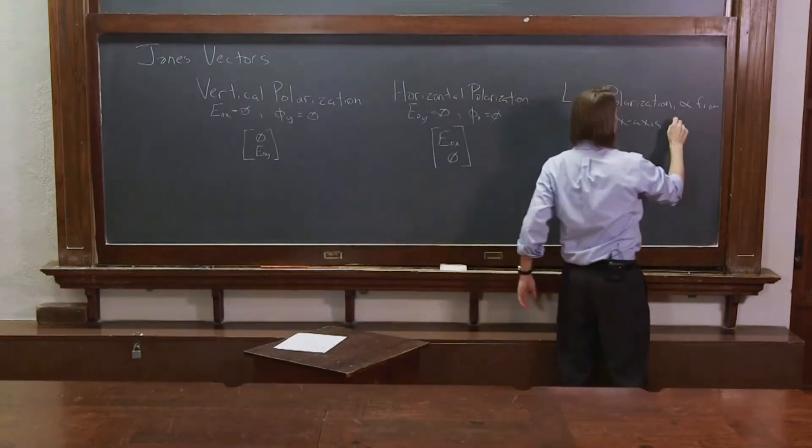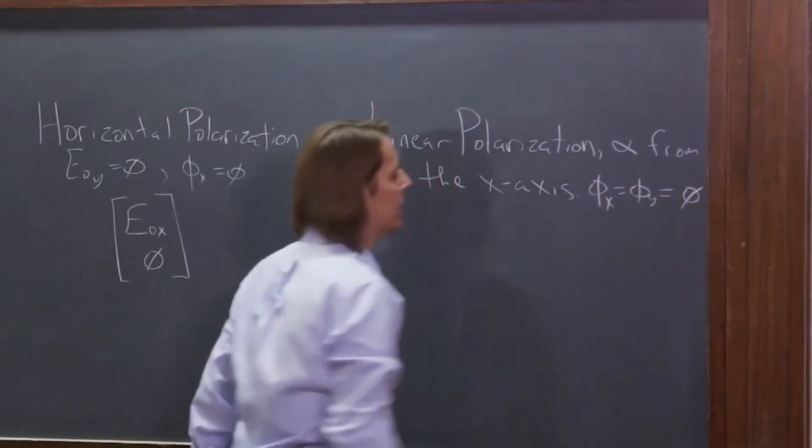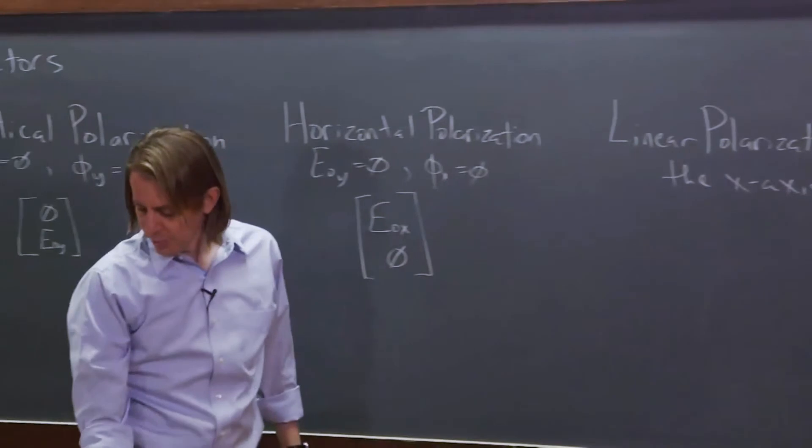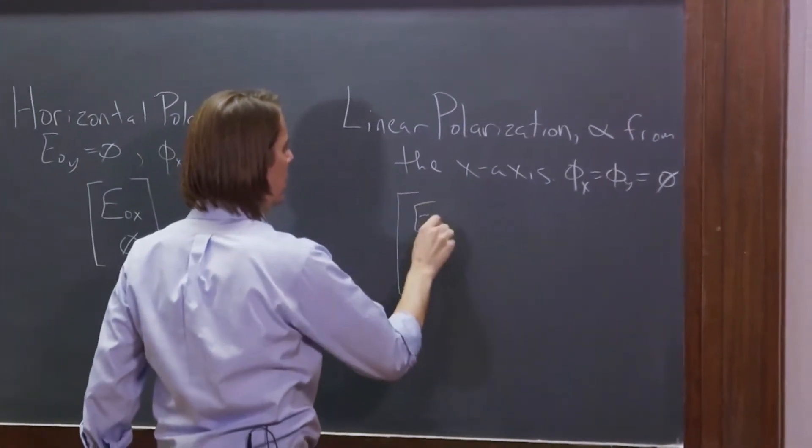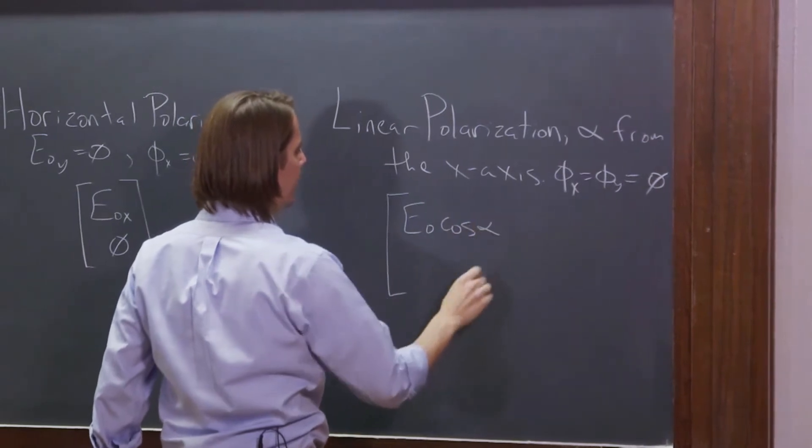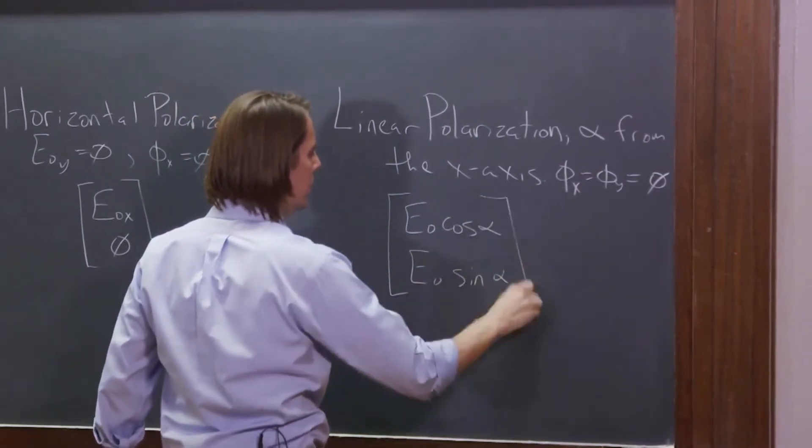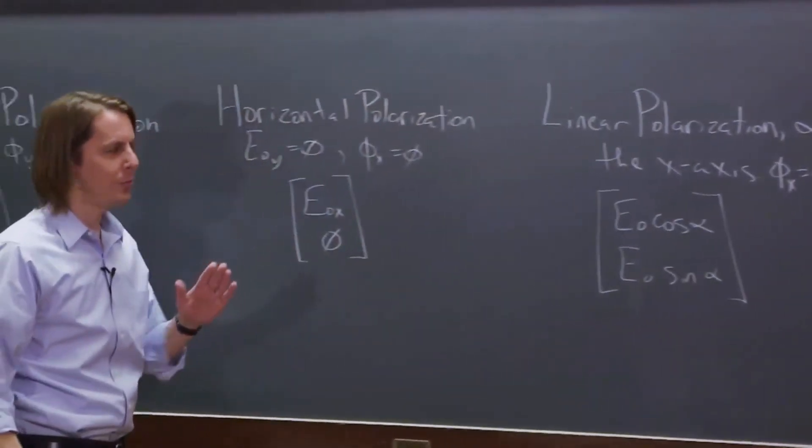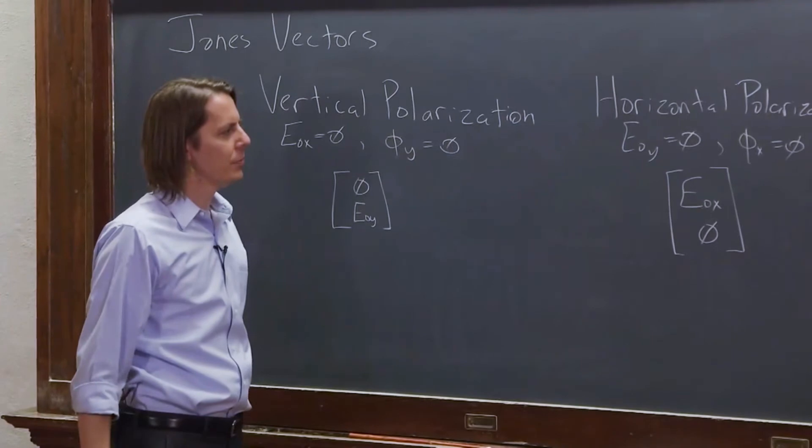So we'll say phi x equals phi y equals zero. And then you would end up writing it like this. E not cosine alpha, E not sine alpha. Where E not is the total amplitude going at some angle alpha. And then of course you break it into components.